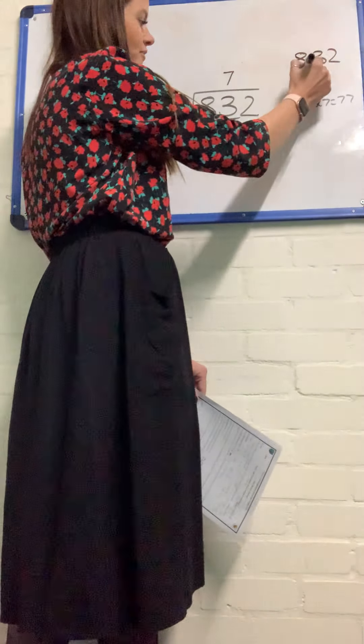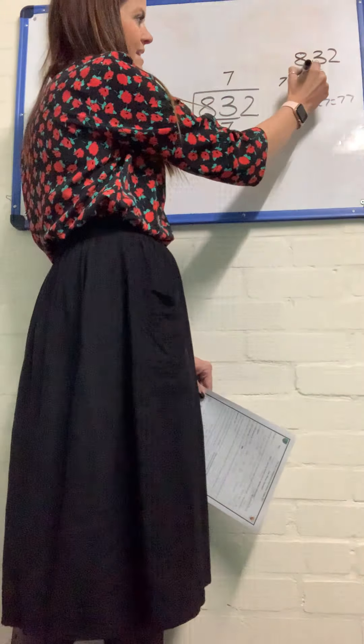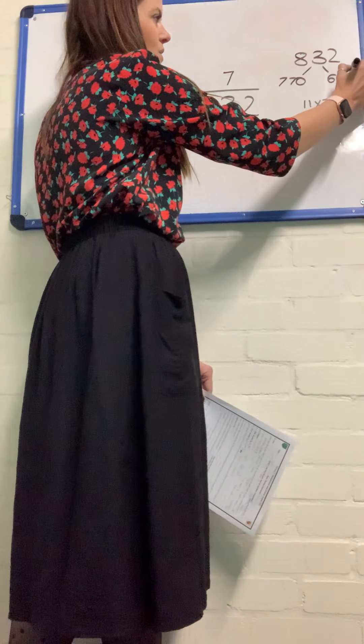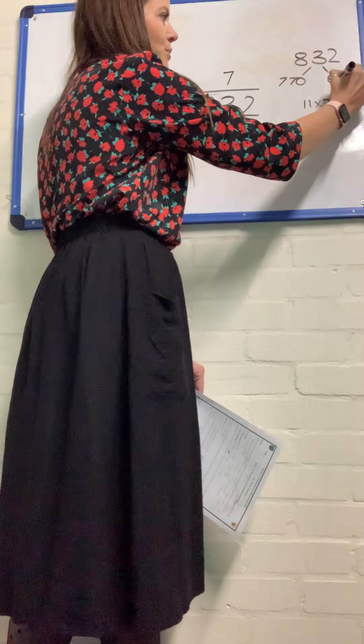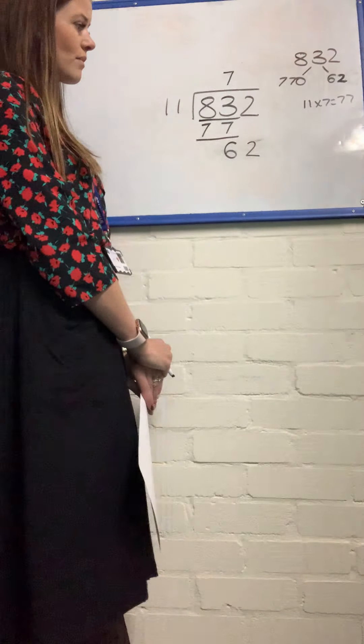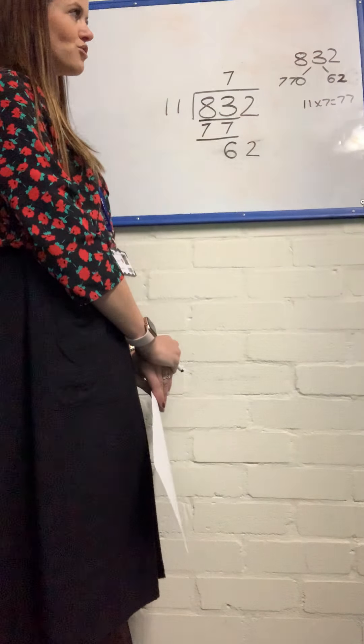If I want to check that I've worked out my dividends correctly, I've got my whole here, which is 832. I first split it into 770, then I split it into 60 and 2. And I know that when I add those two numbers together, I should get the total 832.